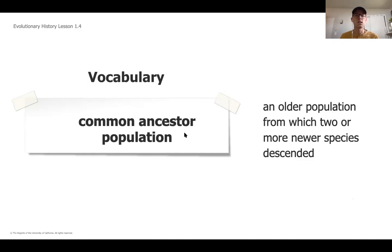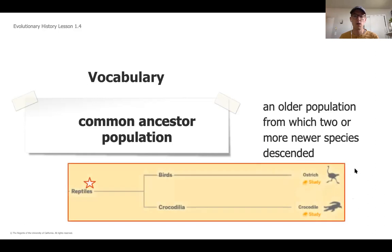Another vocab word that we're going to talk about, which is kind of the opposite of a descendant, is when two species have a common ancestor. An ancestor is an older population from which two or more newer species descended. If we look at that same part of the tree, the common ancestor population is just reptiles, the ones that came before and eventually split off and evolved into birds and crocodiles.